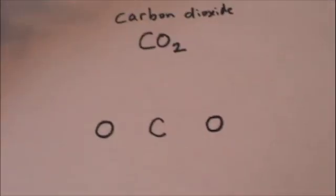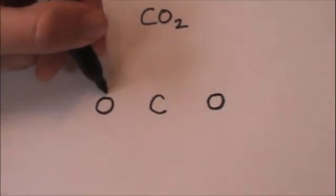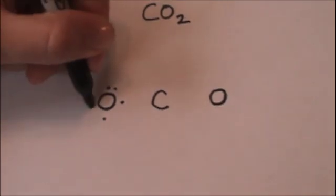And how many valence electrons do each one of those atoms have? Well, oxygen has six valence electrons: one, two, three, four, five, six.